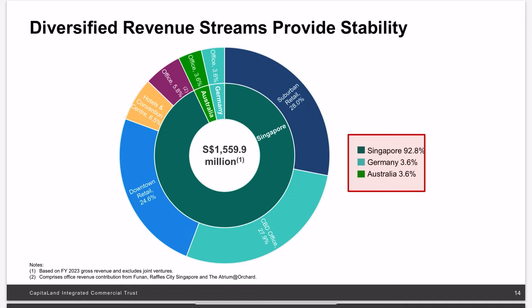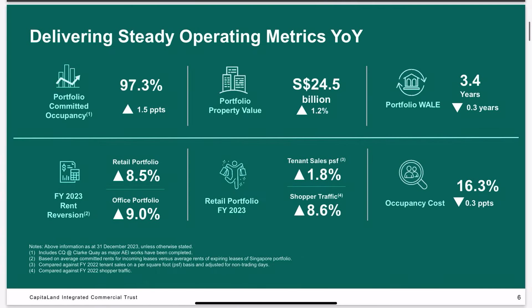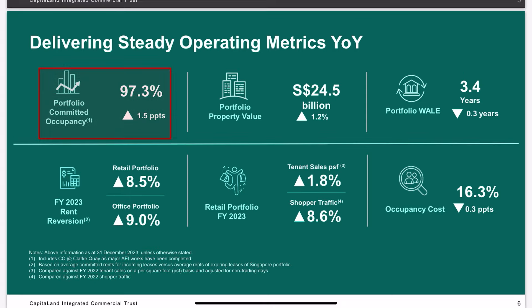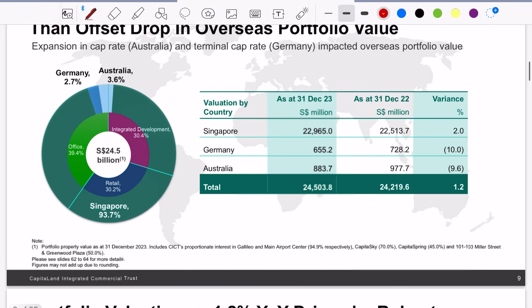With most of their properties in Singapore, CICT is one of the standout REITs that continues to perform and increase their dividends. Looking at important metrics, occupancy went up by 1.5 percent year-over-year while property valuations went up by 1.2 percent year-over-year. In this high interest rate environment, that property valuation increase cannot be underestimated, unlike most REITs where valuations actually went down. Rental reversions were also good across the board for financial year 2023, even for the office portfolio, because Singapore's limited space and business inflows create unique attractiveness. On the retail side, tenant sales and shopper traffic were up year-over-year at 1.8 percent and 8.6 percent respectively.